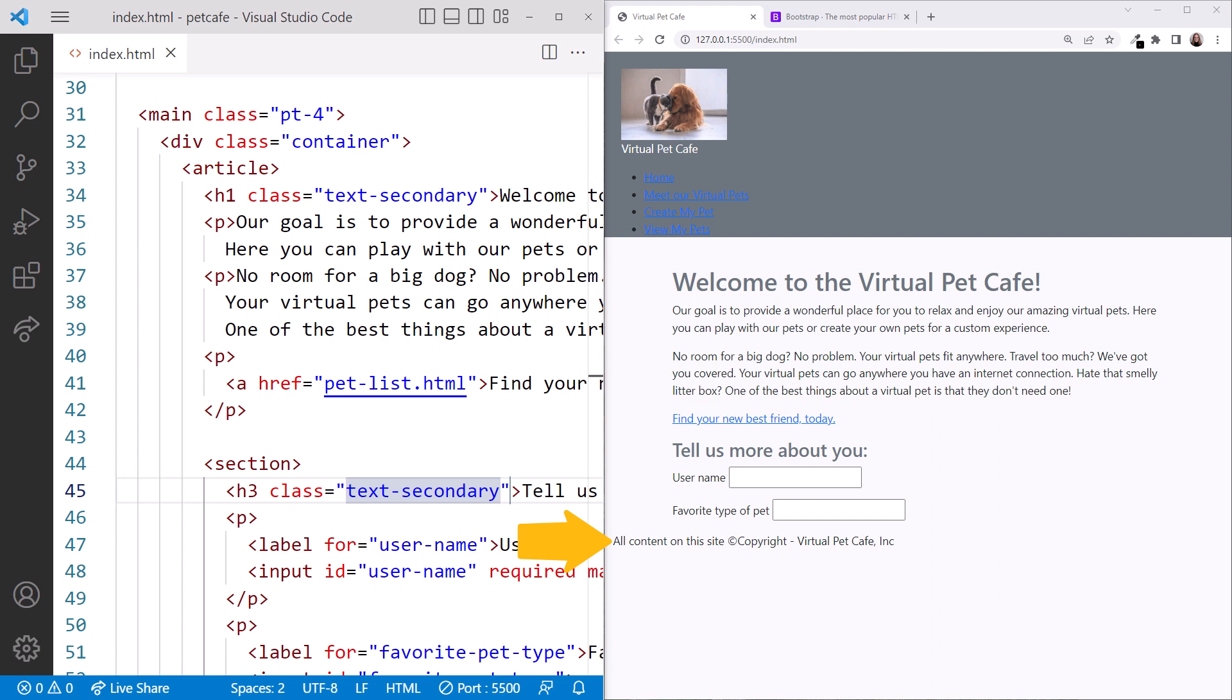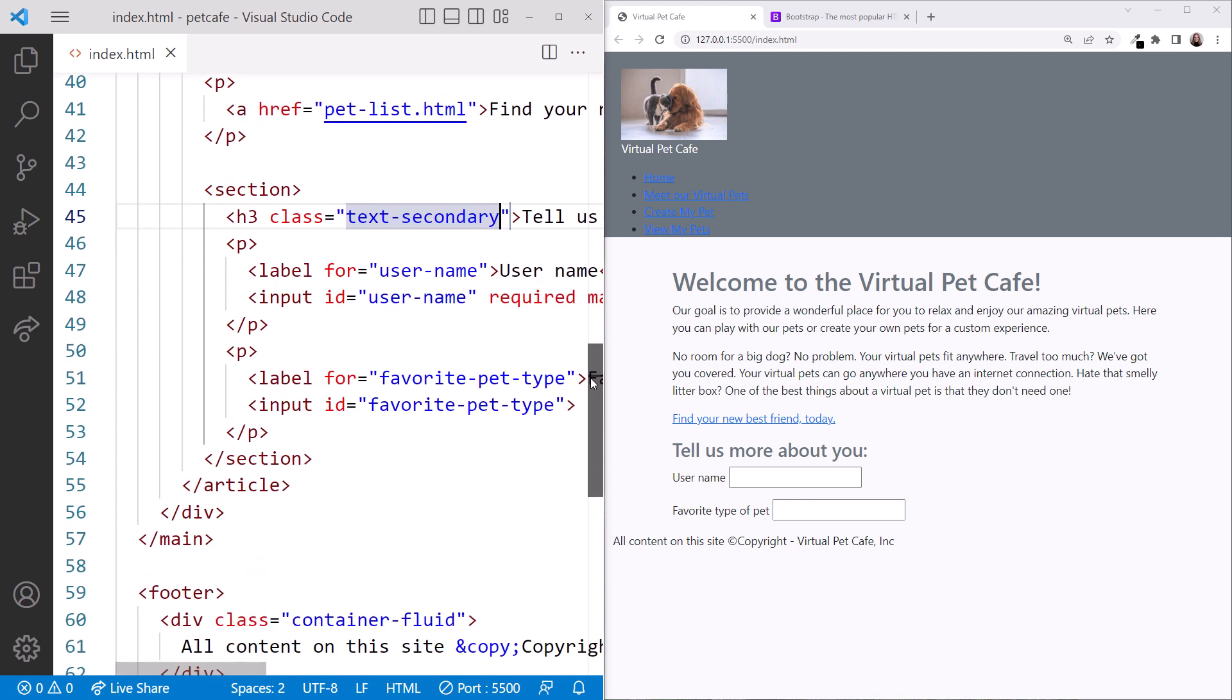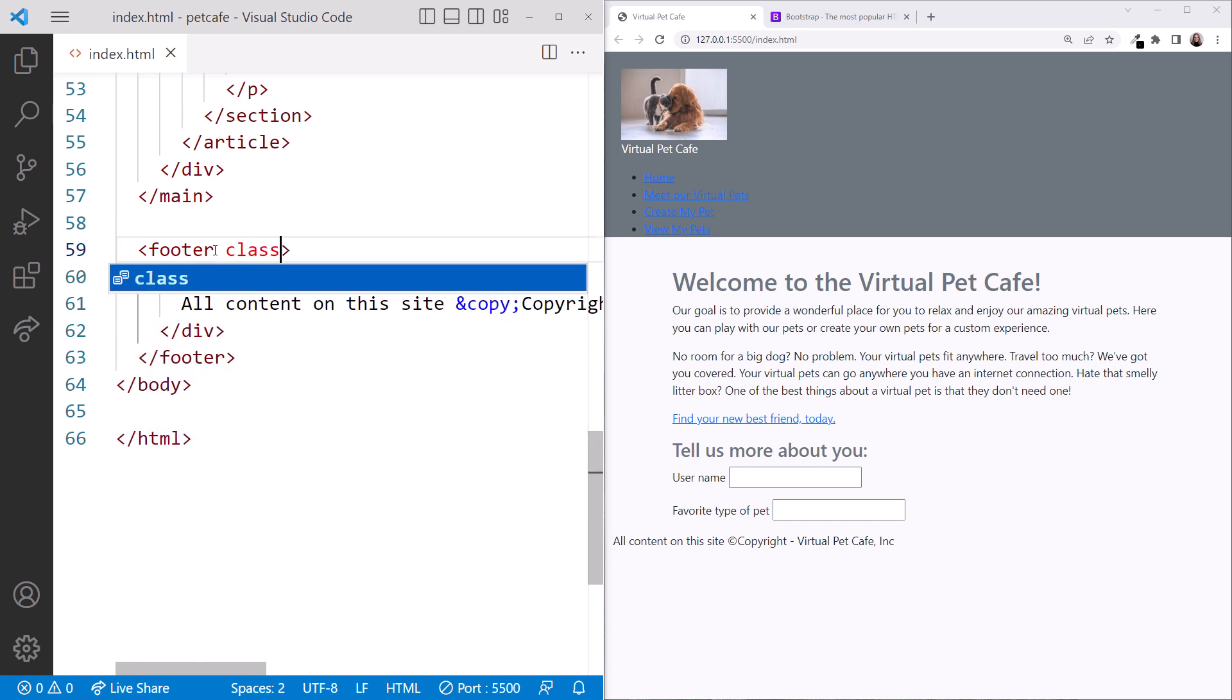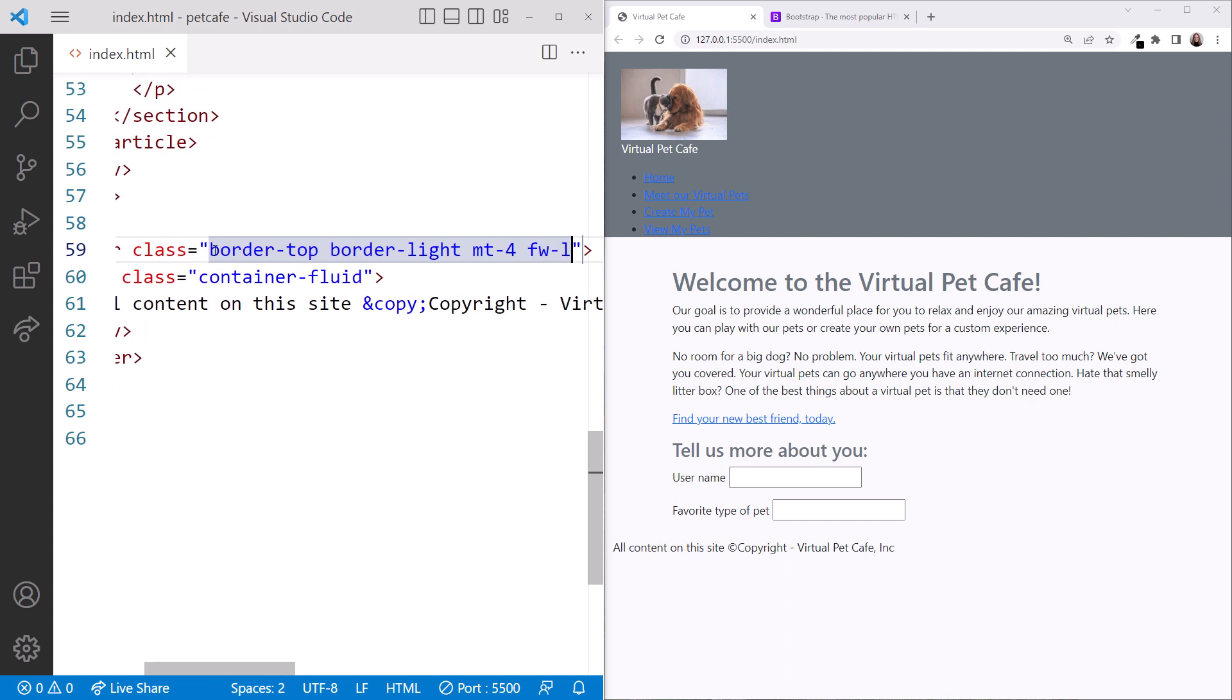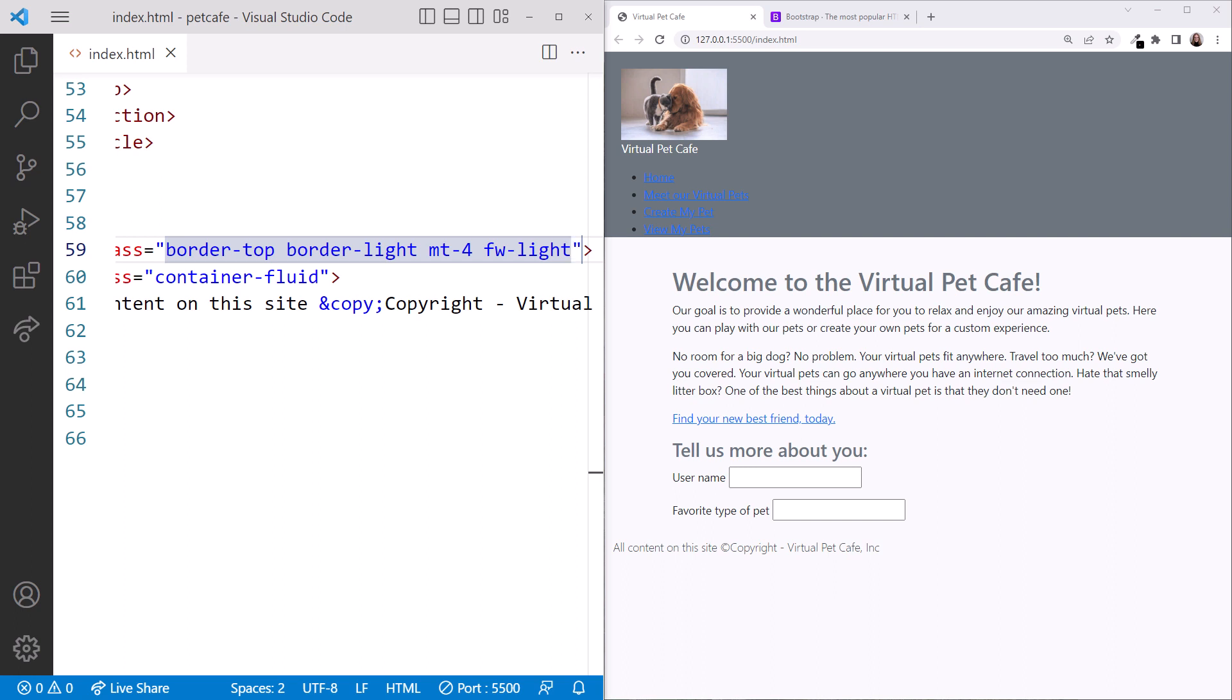Lastly, let's add a little styling to set the footer apart from the rest of the page. Scrolling down, we add the class attribute to the footer element. We'll set a top border, border color, and a top margin of 4. And let's make the text a bit lighter using font weight light. We can't see the border right now because it's the same color as the background. We'll fix that shortly.